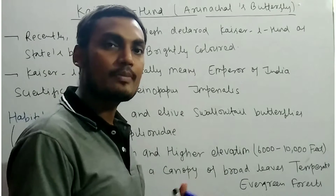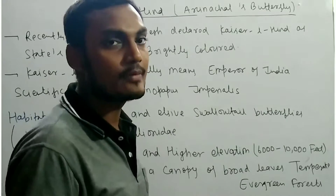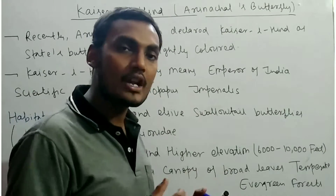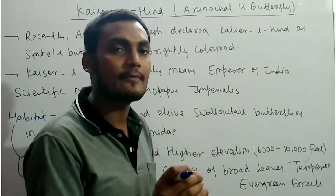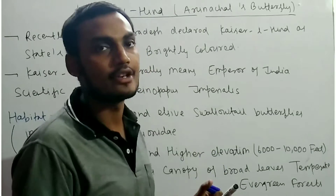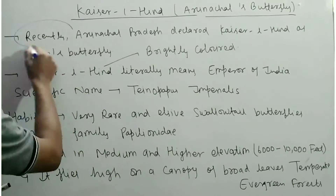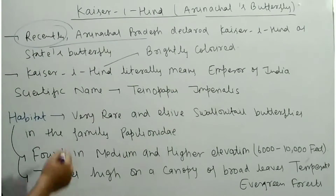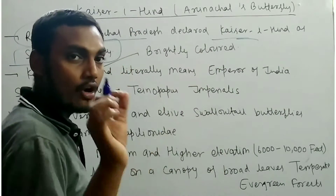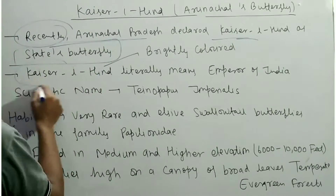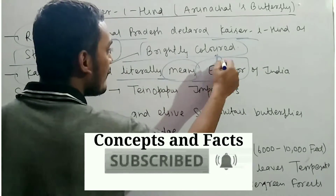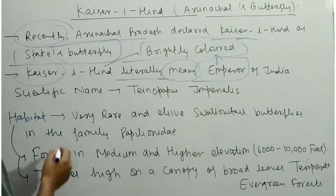Today we will talk about the Arunachal Pradesh recently declared state butterfly, known as the Kesar Ayind, which basically means the Emperor of India. Arunachal Pradesh declared Kesar Ayind as its state butterfly. It is a brightly colored butterfly and its name literally means Emperor of India.